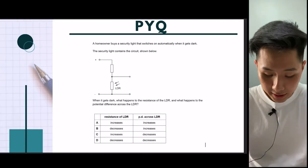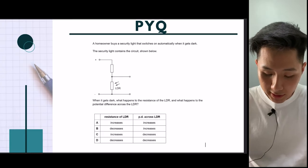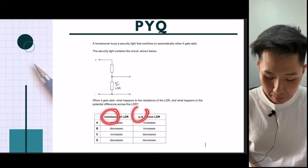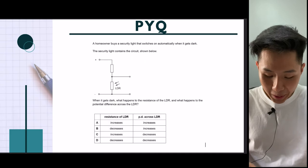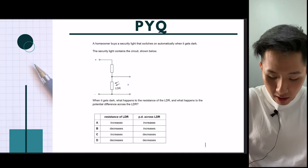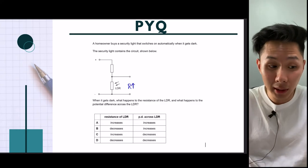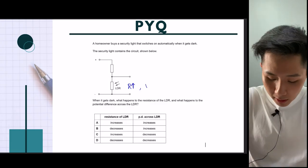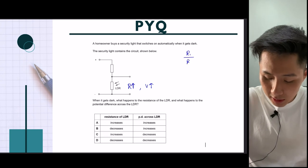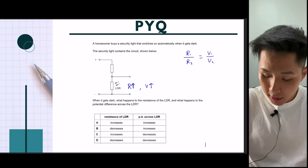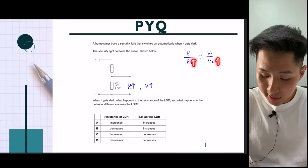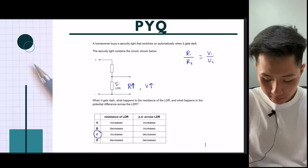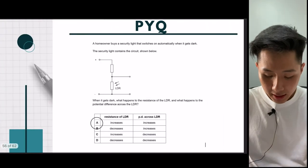Let's look at some practice questions. A security light switches on when it gets dark — what happens to the resistance and PD across the LDR? When it gets darker, fewer photons are present to energize electrons, so LDR resistance increases. Using the potential divider relationship, when resistance increases, voltage across the LDR also increases. The answer is A: both resistance and PD increase.